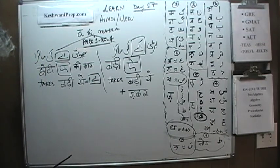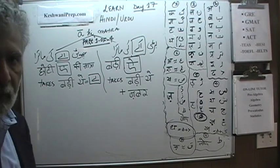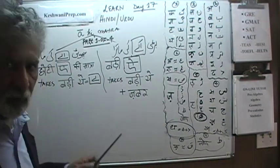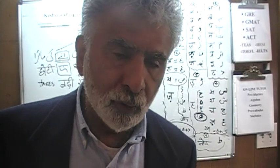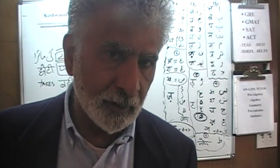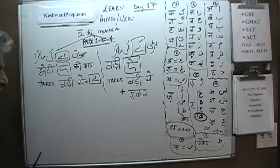Aki Matra — Choti Aki Matra and Badi Aki Matra. Just as with Iki Matra there was a short E and a long E, and with Oki Matra there was a short O and long O, the same concept applies with Aki Matra: there is a short one and a long one. Let's look at Choti Aki Matra first.